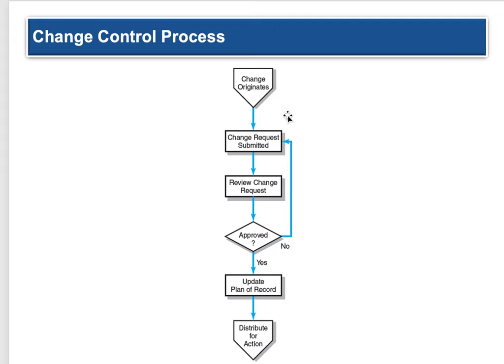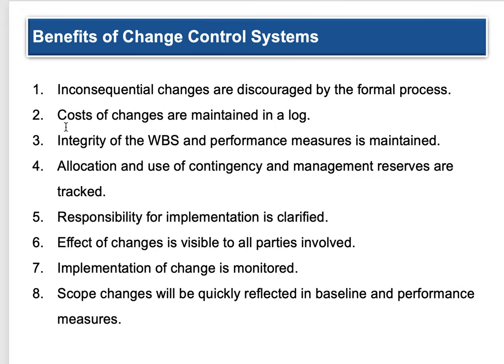Here's the change control flow: change originates, a change request is submitted, the change request is reviewed — is it approved? Yes: update your plan of record and distribute for action. No: go back and submit it again under different conditions. Benefits of a change control system: inconsequential changes are discouraged by the formal process; costs of changes are maintained in a log; integrity of the work breakdown structure and performance measures is maintained; allocation and use of contingency and management reserves is tracked; responsibility of implementation is clarified; your plan gets better and better as you add to it; the effect of changes is visible to all parties involved; implementation of change is monitored; and scope changes will be quickly reflected in the baseline performance measures.